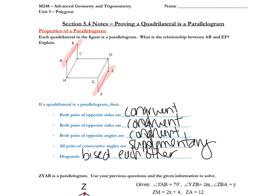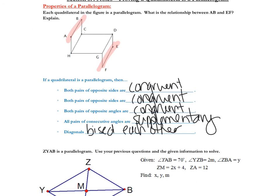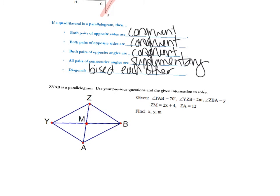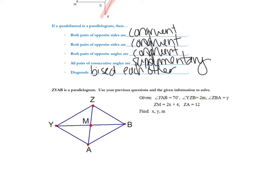So basically, that is just the properties of a parallelogram, which we know by now. It says ZYAB is a parallelogram, given that angle YAB is 70, angle YZB is 2M. Mark your diagrams, kids. Angle ZBA is Y.